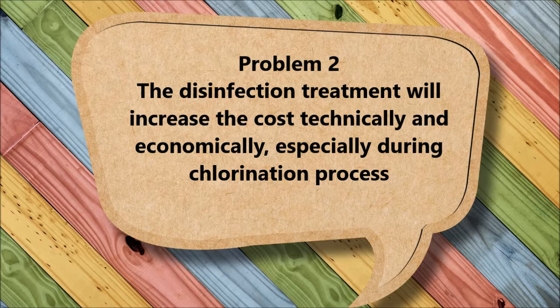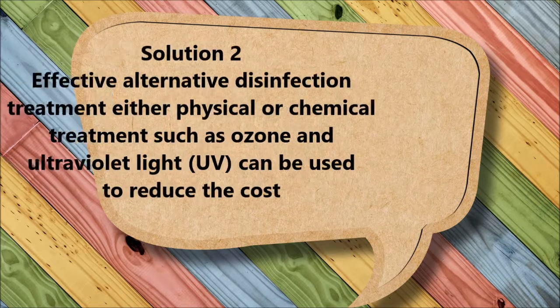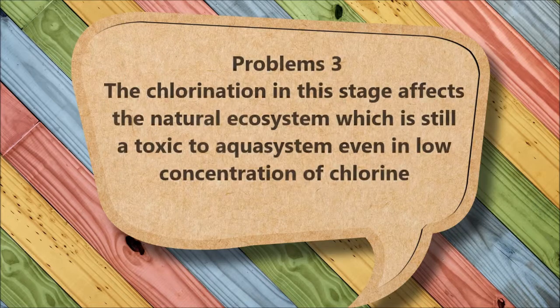The second problem is that disinfection treatment increases costs both technically and economically, especially during the chlorination process. The suggested solution is to use effective alternative disinfection treatments, either physical or chemical, to reduce costs — such as using ozone and ultraviolet light.